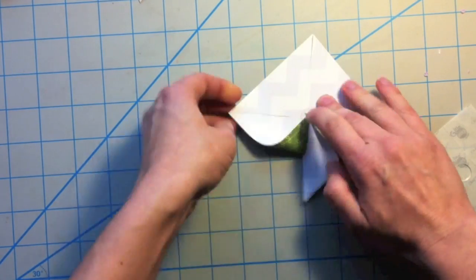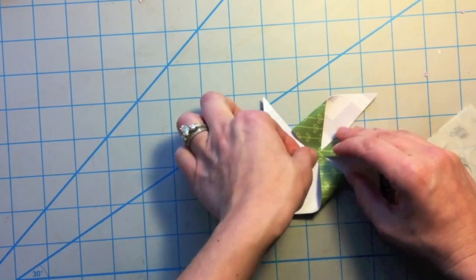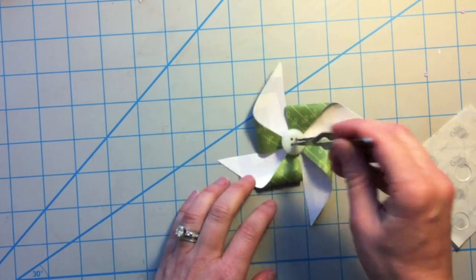And then I'm just going to take the corner and I'm just going to fold them into the glue. And this is going to hold that paper in place while you get whatever the center you want to use for your pinwheel. I'm going to use a button.